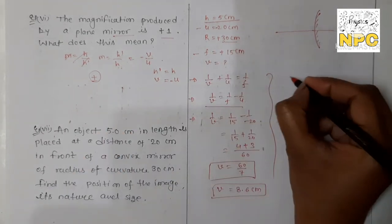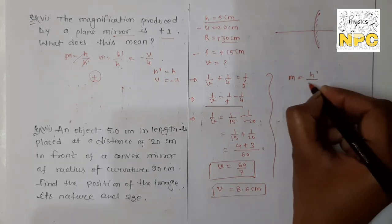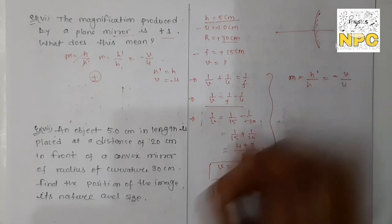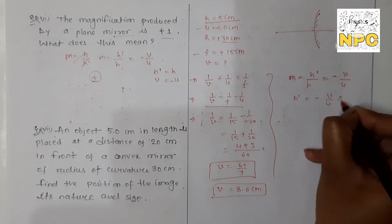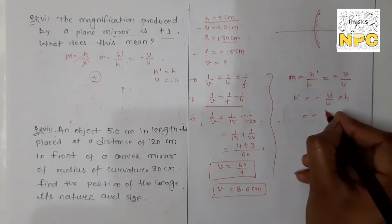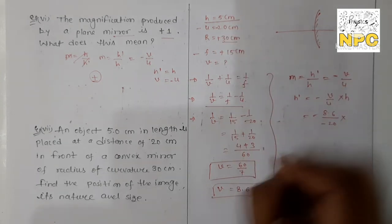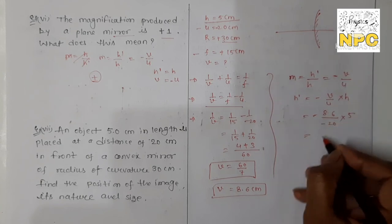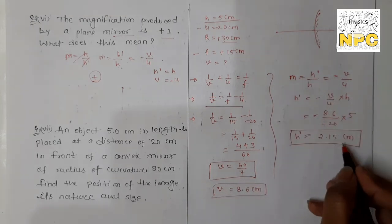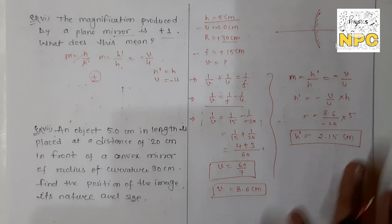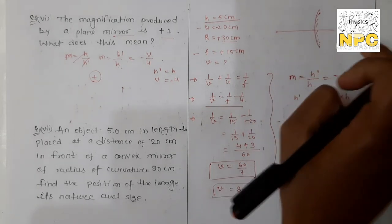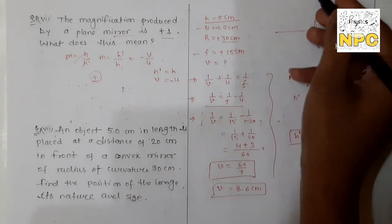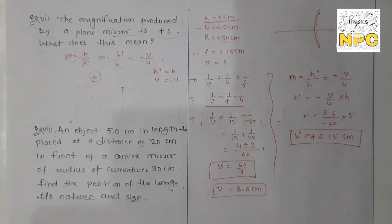Now finding magnification: H' = -(V/U) × H = -(8.6 / -20) × 5. The minus and minus make plus, so H' ≈ +2.15 cm (approximately 2.5 cm). The positive sign means the image is above the principal axis, so the image is erect and virtual. For a convex mirror, the image is always virtual, erect, and diminished, which is confirmed here — the image height (~2.15 cm) is smaller than the object (5 cm).